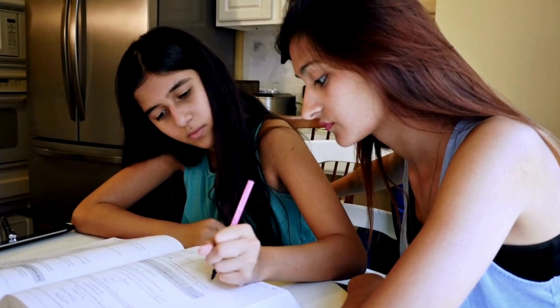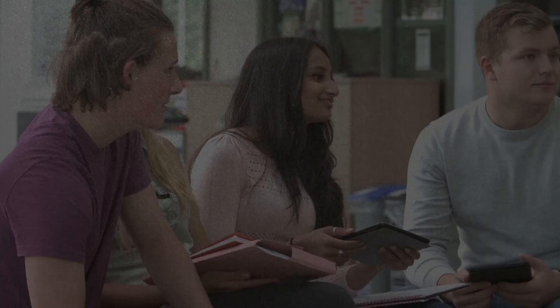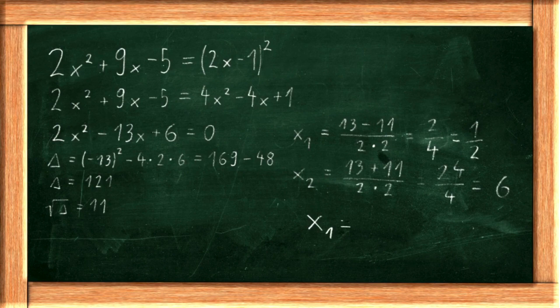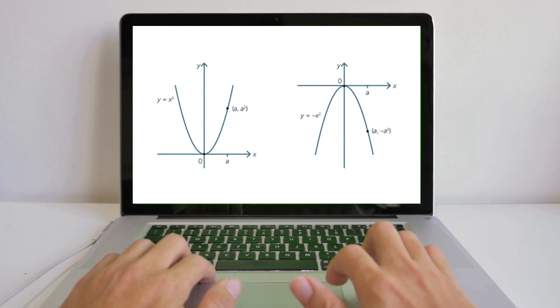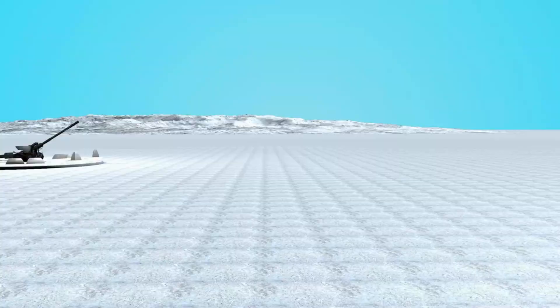First, choose a problem or concept. Suppose you're working on a math problem involving quadratic equations. As you solve the equation, articulate each step — for example: 'First I'm setting the equation to zero to find the roots. Now I'm using the quadratic formula to solve for x.' Next, clarify the reasoning and explain why each step is necessary: 'I set the equation to zero because the roots are the x values where the graph intersects the x-axis.' Then connect this problem to larger mathematical principles — understanding quadratic equations is crucial because they model many real-world scenarios, like projectile motion.